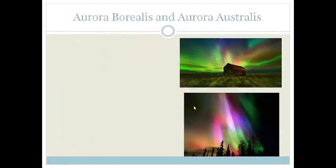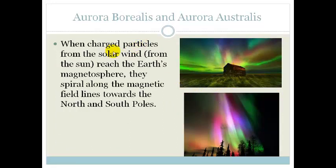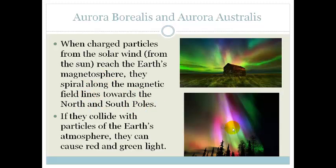Now, the cool thing about our magnetosphere is that when the charged particles from the solar winds, from the Sun, reach the Earth's magnetosphere, they spiral along the magnetic field lines towards the North and South Poles. And what happens is, when they collide with the particles in the Earth's atmosphere, they can cause red and green light.